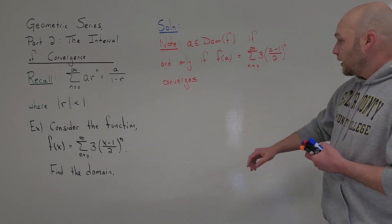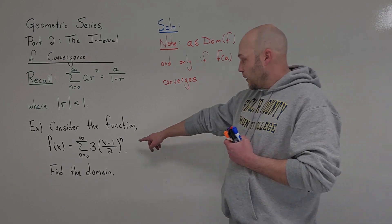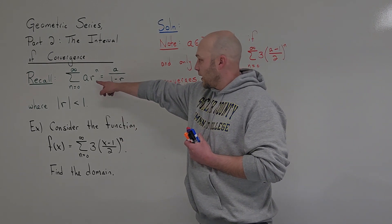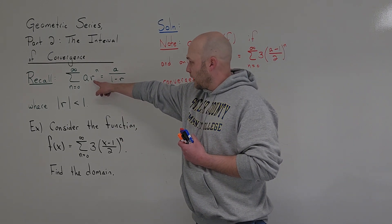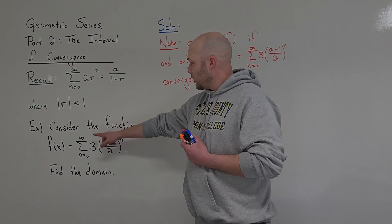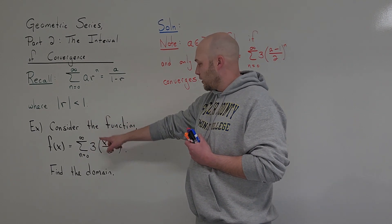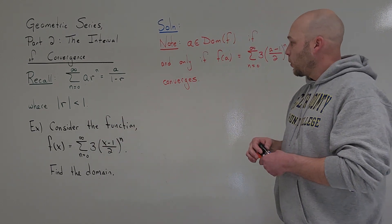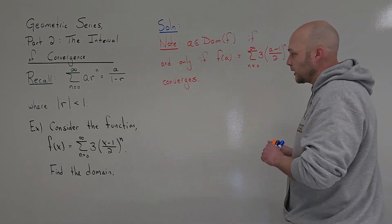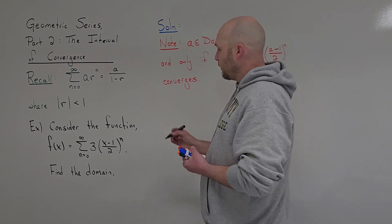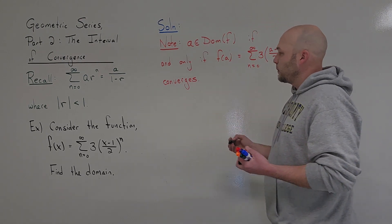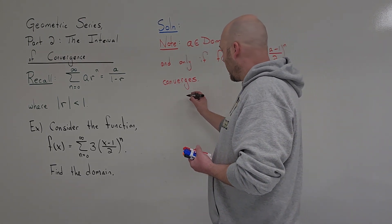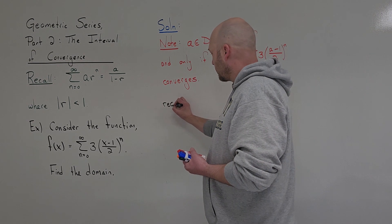Look at the function we have here and match it to the series. We can identify a = 3 and r = (x minus 1) over 2. That tells me that in order for a number to be in the domain, there is a requirement.